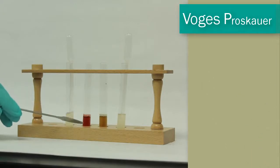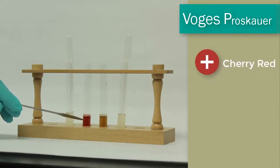Notice in this tube you have a cherry red color. The bubbles are still on top in both tubes but this cherry red color means that acetoin was produced and this would be a positive VP reaction.